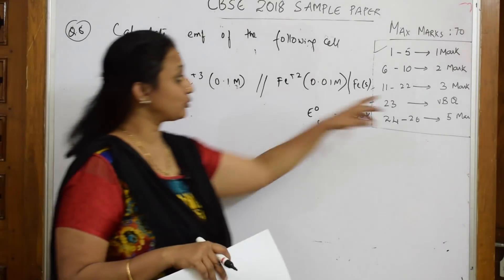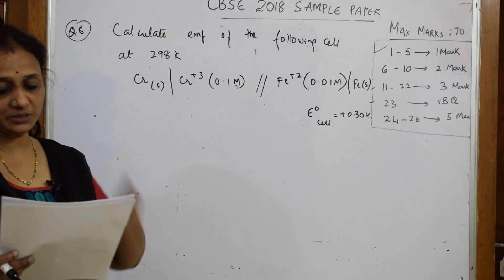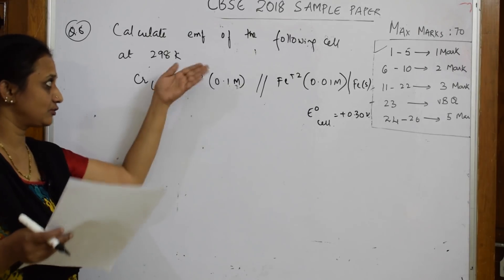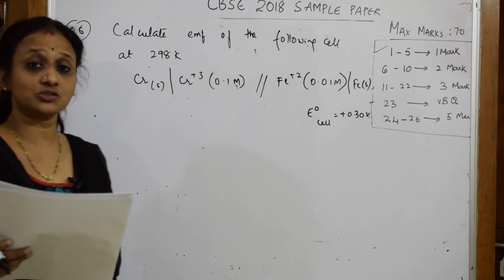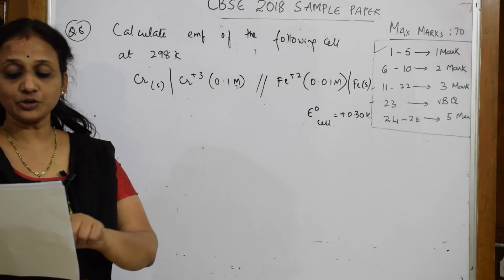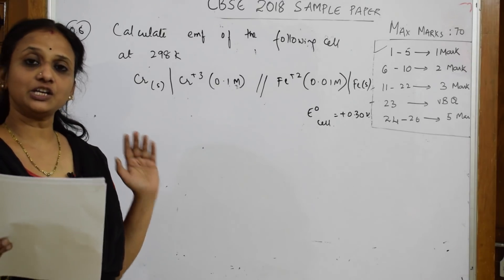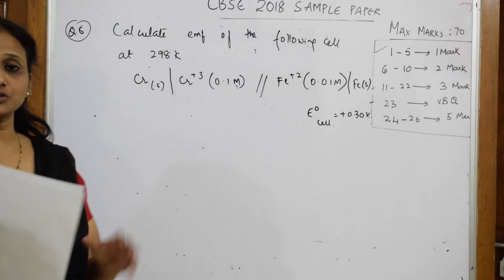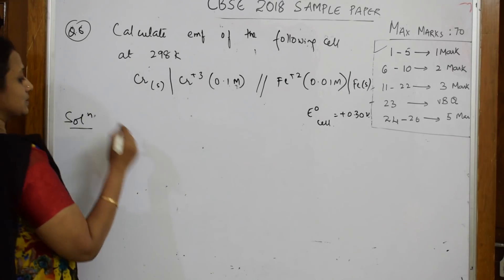Let's see the eighth question in electrochemistry. In this question they have given the cell notation and I need to find the E_cell value. I've already written that. As they've given only the cell notation with the salt bridge, as soon as I get this equation for calculating E_cell, I need to first write the cell reaction. The cell reaction — how should you write it? Start from here.